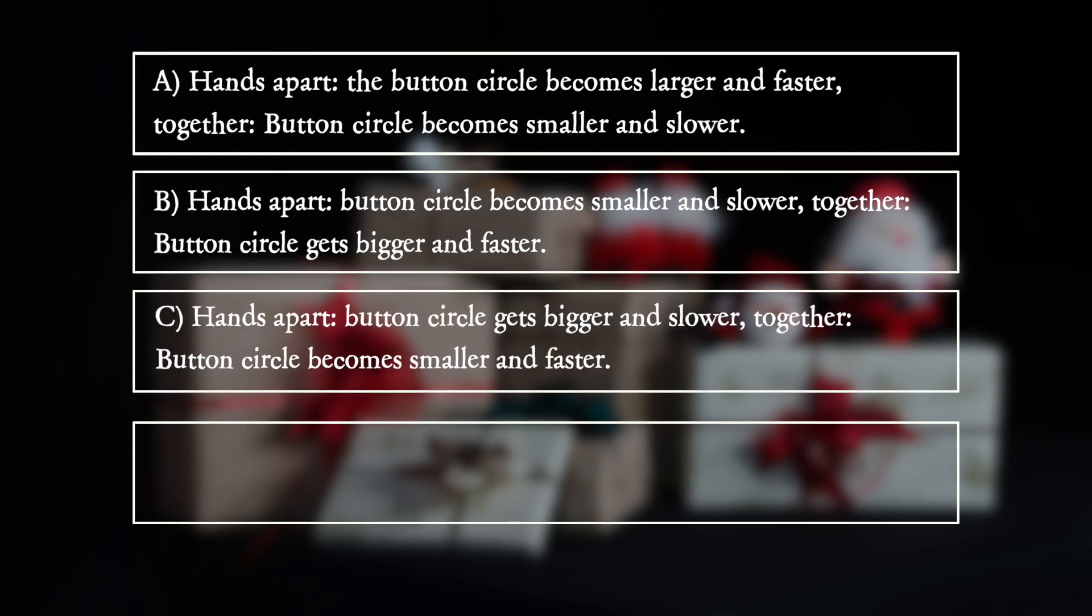C. Hands apart: button circle gets bigger and slower. Together: button circle becomes smaller and faster.